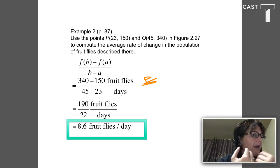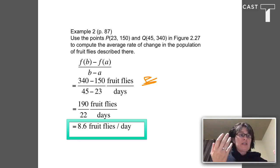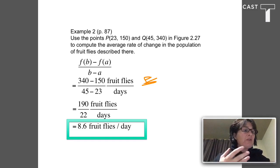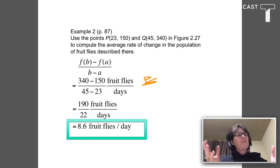If I asked you, is the fruit fly population increasing or decreasing? How many more fruit flies are we gaining every day? You could say that between day 23 and day 45, we're gaining about 8.6 fruit flies per day.